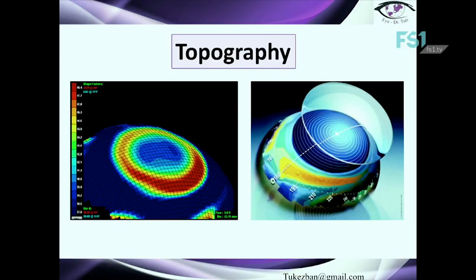On this slide we can see a color-coded topography image — this is the main thing to pay attention to when looking at a topography map. Warmer colors represent higher dioptric power, indicating steepening of corneal curvature, while cooler colors represent lower dioptric power and flatter curvature. Similar color-coded maps can be used to present changes in elevation. There is always a scale on the side, and based on the color we can estimate the power of the cornea in diopters.